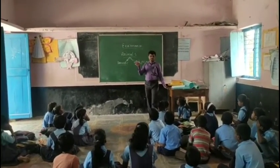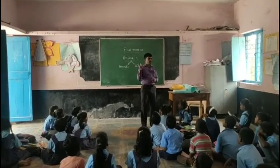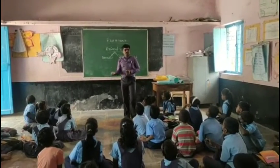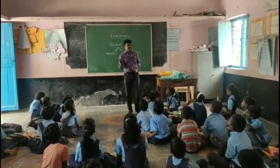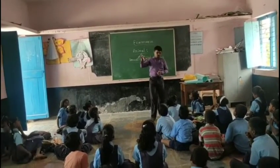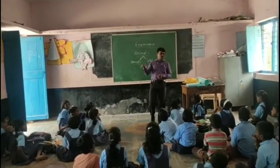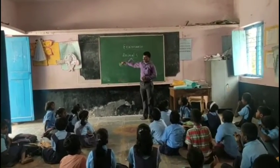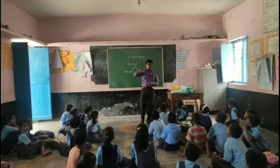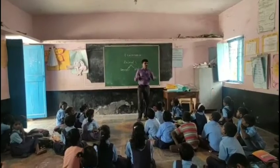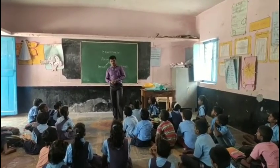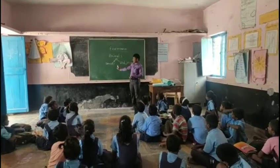Cat is used for catching rat and mouse. Cow is used for milk. Buffalo is also for milk. Goat is also for milk and meat. Sheep is also used for meat and wool. Ox is used for plowing our land. Horse is used for riding. So all these are called domestic animals.